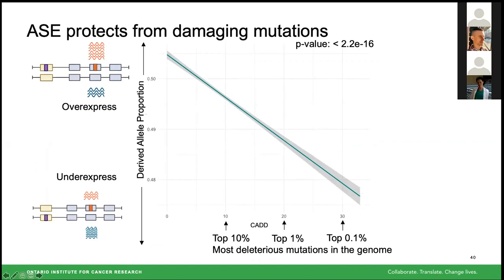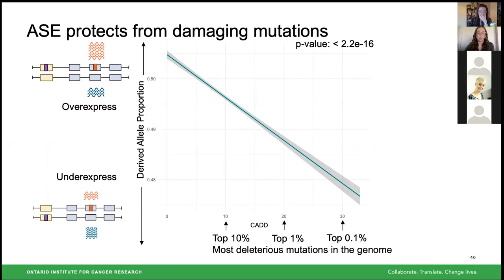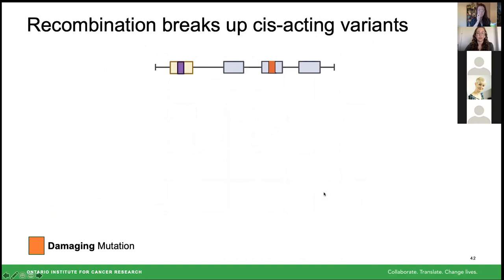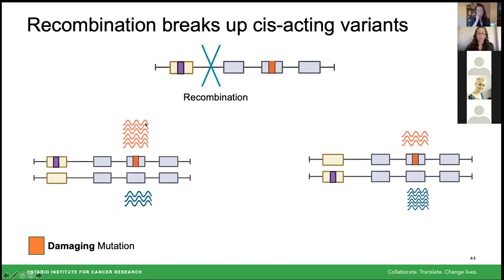ASE is protecting from highly deleterious mutations, and the slope of this line tells us how efficient this action is — a steeper slope means more efficient underexpression of highly deleterious mutations. When I split this by recombination, regions with high recombination shown in orange have a steeper slope and are more efficient at underexpressing highly deleterious mutations compared to normal and lower recombination. In high-recombination regions, recombination can break apart linkage between a regulatory variant and a damaging mutation, allowing both haplotype combinations to exist, so selection can then more efficiently remove haplotypes overexpressing the damaging mutation.